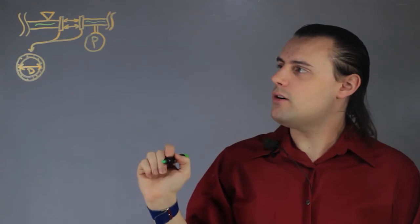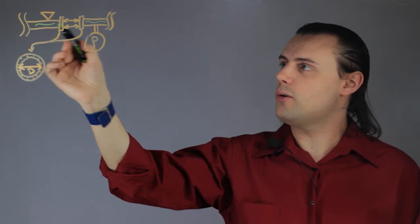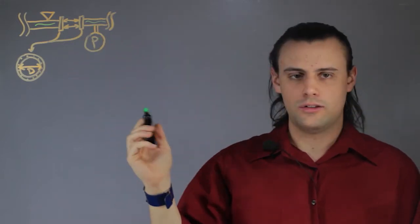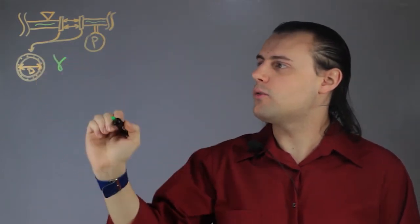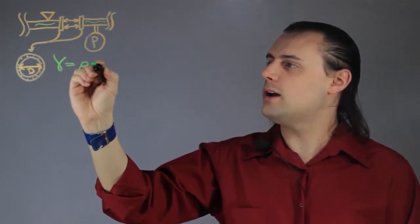And what we need to know is the specific weight of the liquid that is flowing through these pipes. The specific weight is given by the Greek letter gamma and it's equal to rho times G.